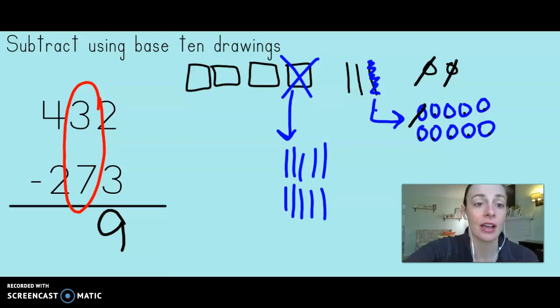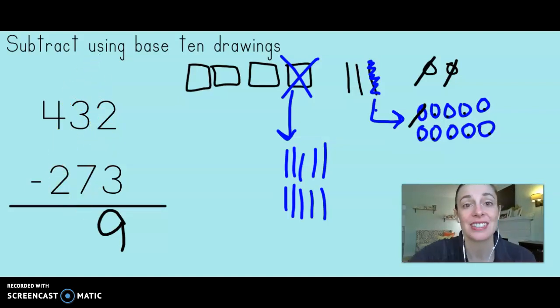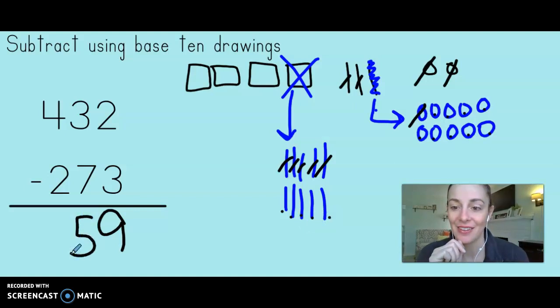Notice that I'm drawing them in an organized way. Now that I have ungrouped a hundred, I should be able to cross off seven of my tens. Let's do that. One, two, three, four, five, six, seven. And let's count how many are left. Very good. So I have five tens left.